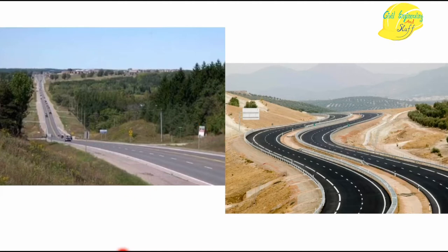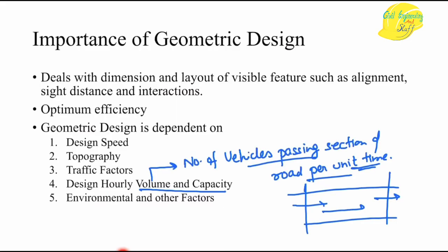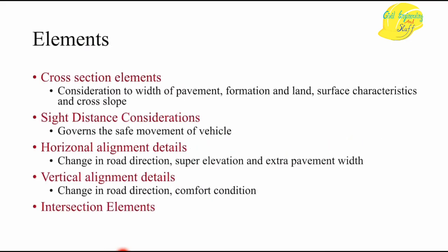A straight road would be the shortest path but overall more uneconomical, compromising the cost-benefit scenario. The components of geometric design include cross section elements — which cover pavement width, formation, land surface characteristics, and cross slope — as well as sight distance considerations, horizontal alignment, vertical alignment, and intersection elements.